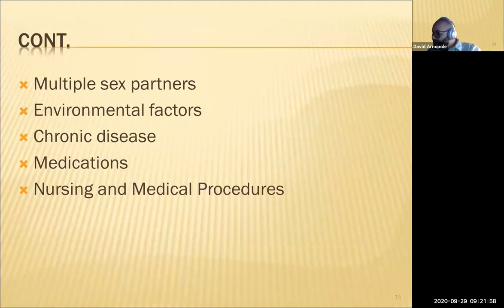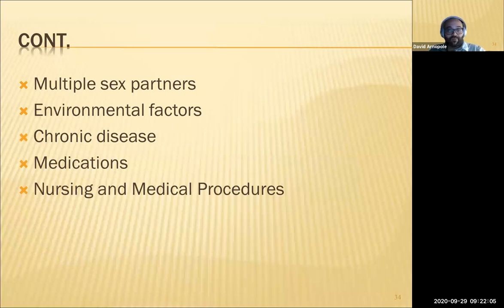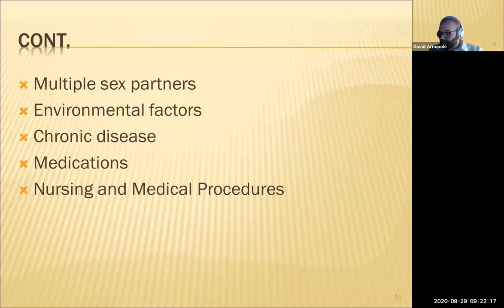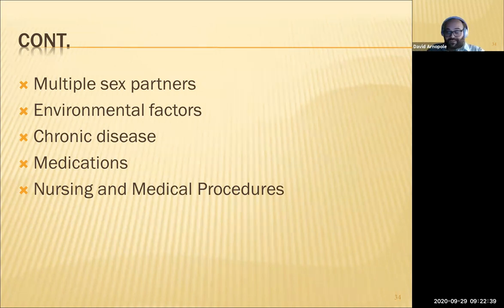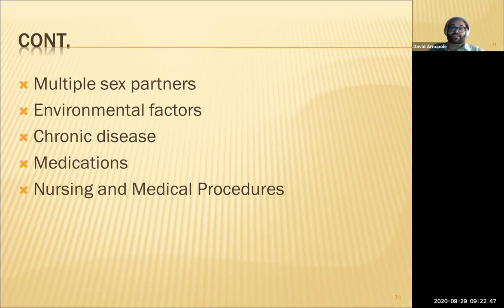Multiple sex partners increase the risk of STIs — females have a higher risk of cervical cancer and men have a higher risk of penile cancer. Environmental factors matter: homelessness, cleanliness of home. People with cancer have major problems because chemotherapy decreases white blood cell production and we need white blood cells to fight things off. Taking antibiotics increases the risk of superinfection. Chronic diseases constantly stress the body, and when you're chronically stressed, your immune system doesn't work right.